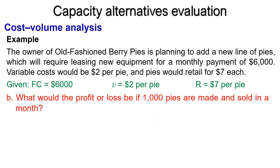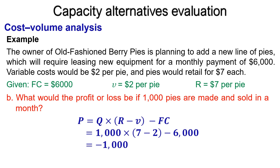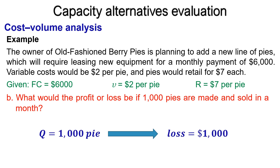The second question is to find the profit or loss if Q = 1,000 pies. Substituting into the formula: P = 1,000 × (7 − 2) − 6,000 = −1,000. This negative sign means loss. So, if they produce and sell 1,000 pies monthly, they will face a loss of $1,000.